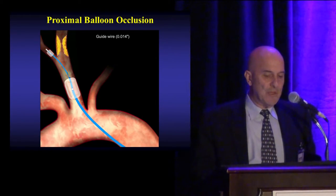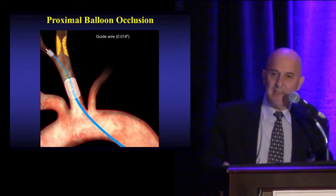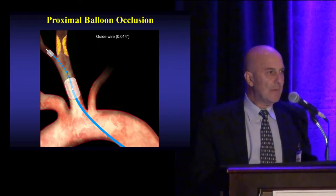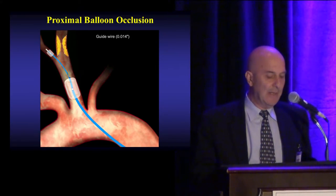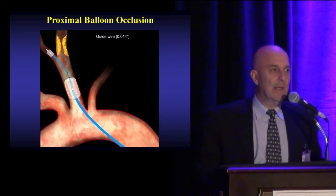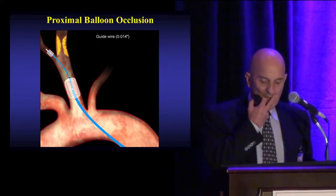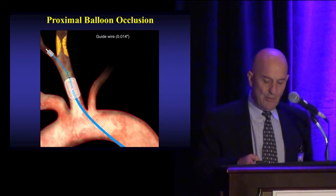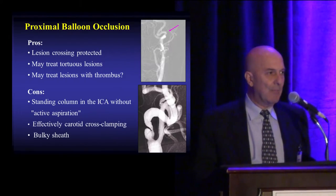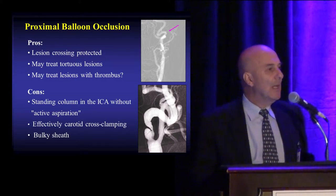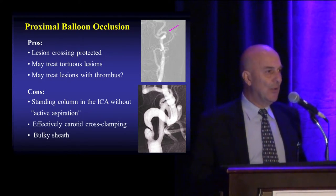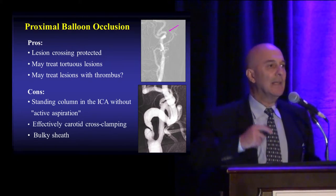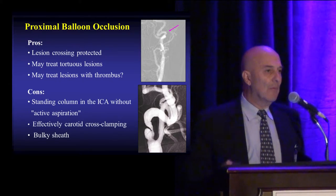Let's look at proximal balloon occlusion. With the MoMA device, there is a balloon placed in the external carotid artery connected to a guiding catheter that has another balloon to occlude antegrade flow in the common carotid artery, with a working channel for the procedure. By inflating both the proximal and distal balloons, there is flow stagnation and no way a particle can go to the brain. When you cross the lesion, you already have protection in place before interacting with the plaque.